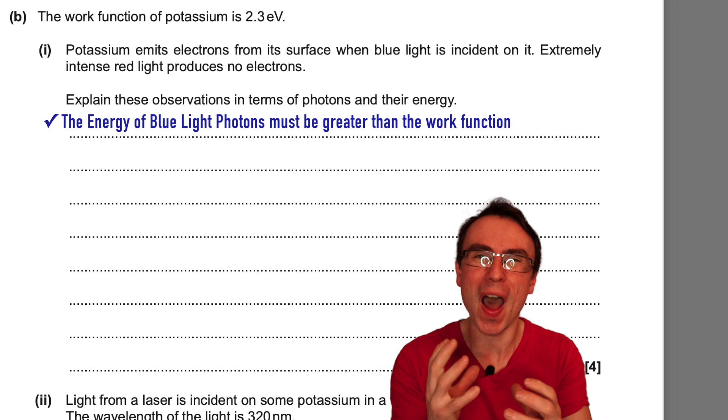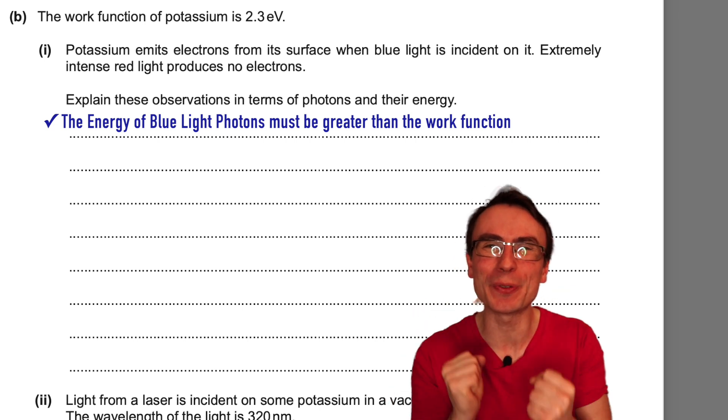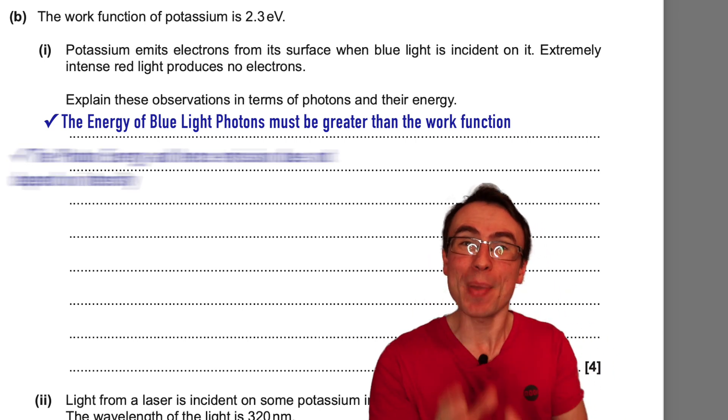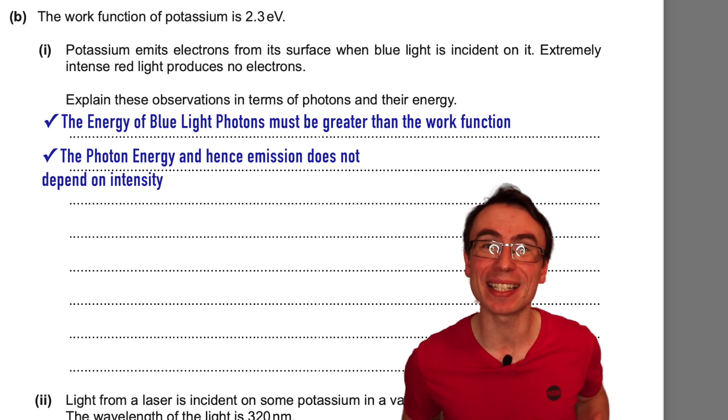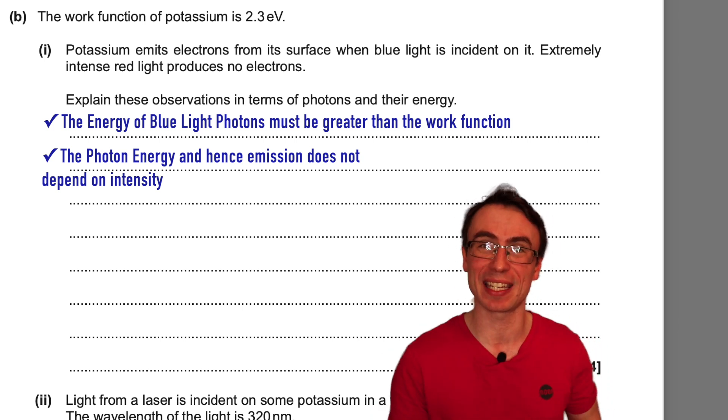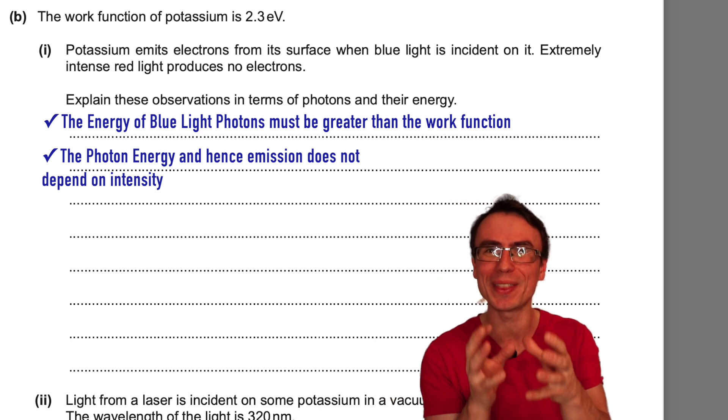And this is where the particle nature of light really comes in. The emission of electrons is independent of the intensity. Whether an electron is emitted or not does not depend on the intensity,